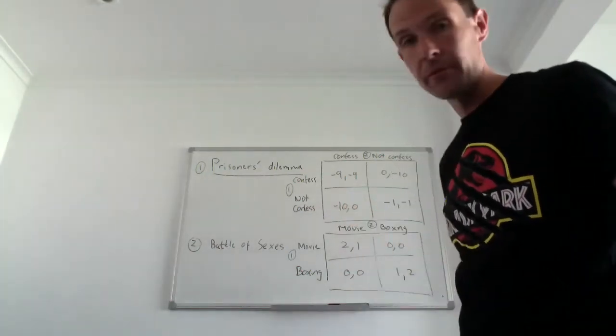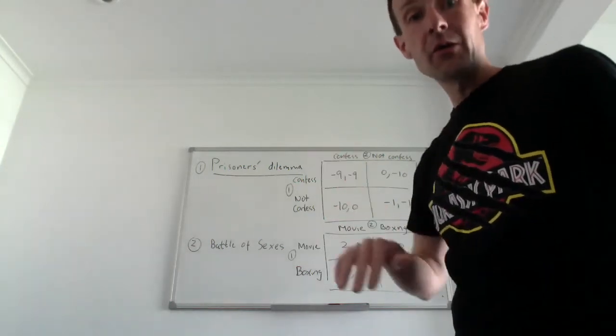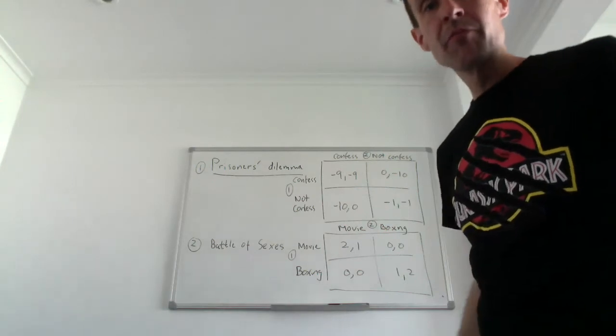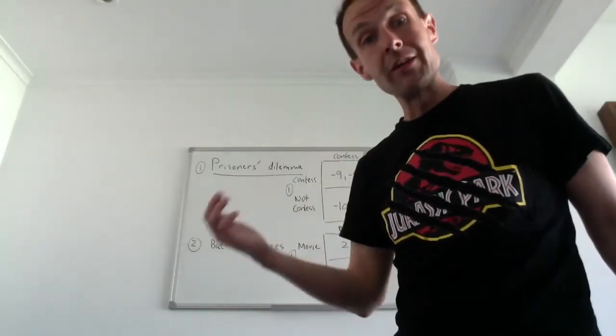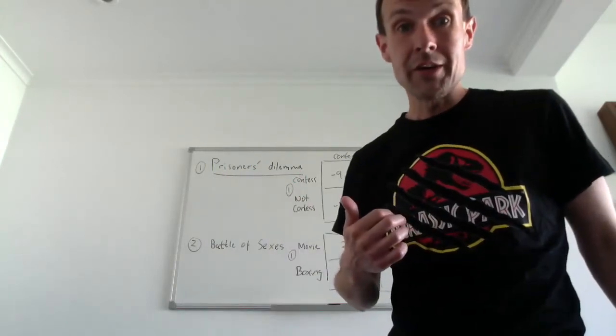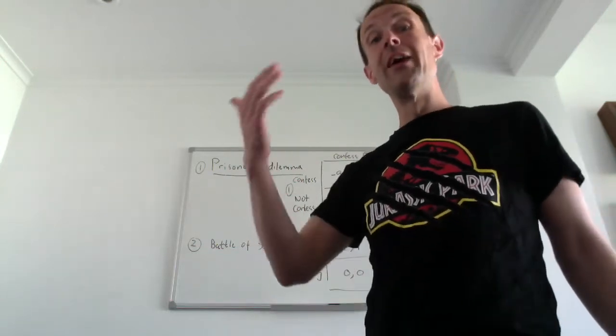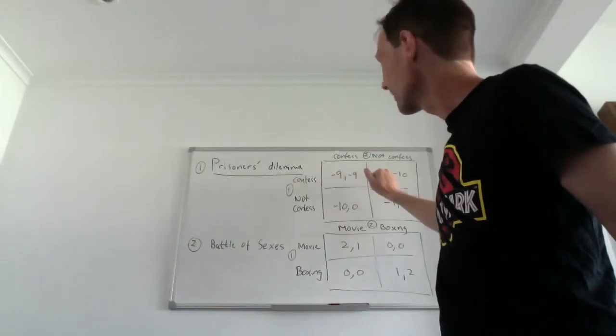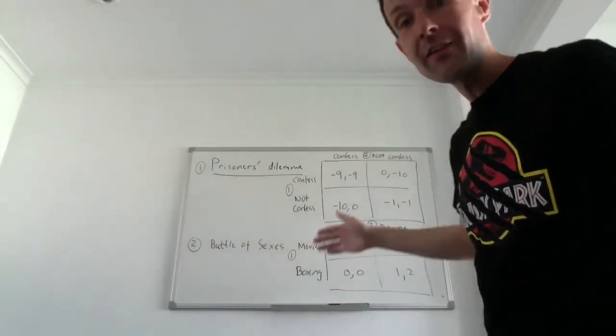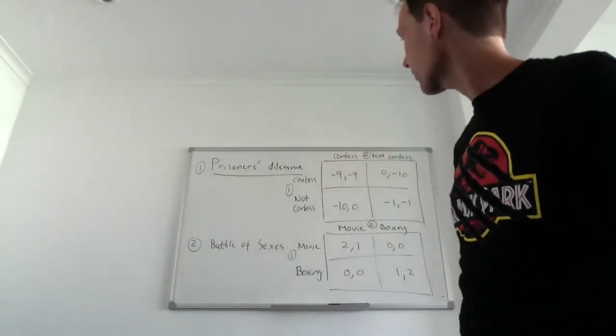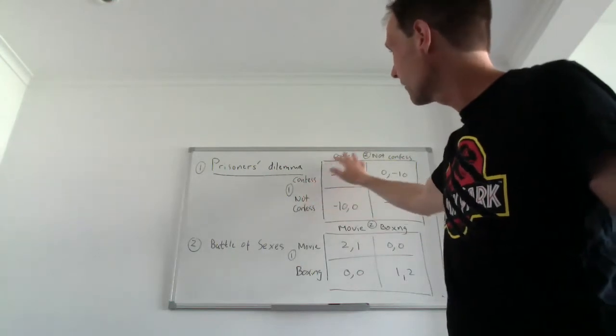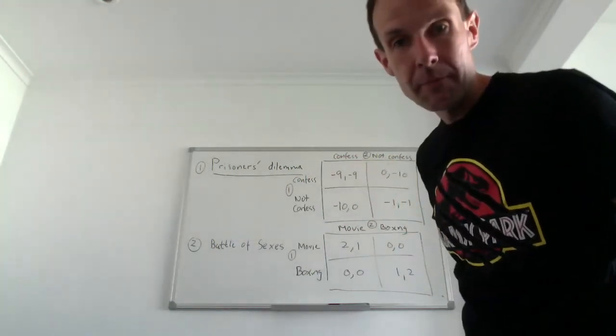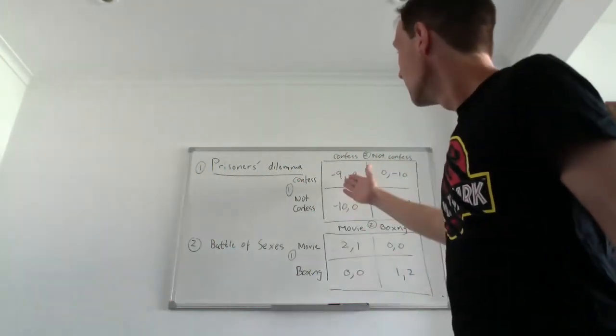The idea is that if both of us confess we get nine years in prison. If both shut up and don't say anything we get one year when the police capture us. If I don't confess but you actually confess, I get ten years in prison and you get out for free. You don't get any penalties at all. So we are now questioned by police. We are in two separate rooms. All of us know this outcome here.